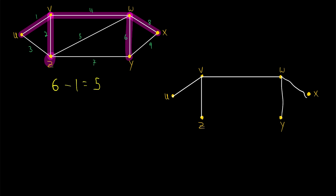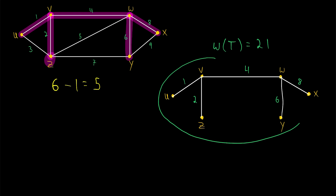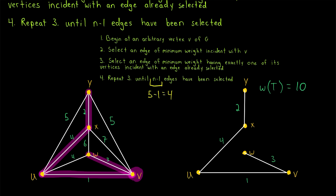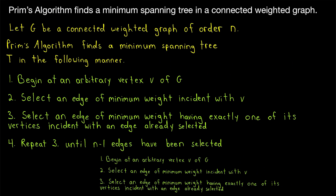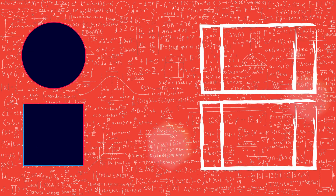We have completed Prim's algorithm to find this minimum spanning tree. If we call this minimum spanning tree t, its weight is 21 — the sum of the weights of the edges in the tree. If we were to run this algorithm again starting at any vertex of this graph, we will always get a spanning tree with weight 21. And that is how to use Prim's algorithm to find a minimum spanning tree in a connected weighted graph.